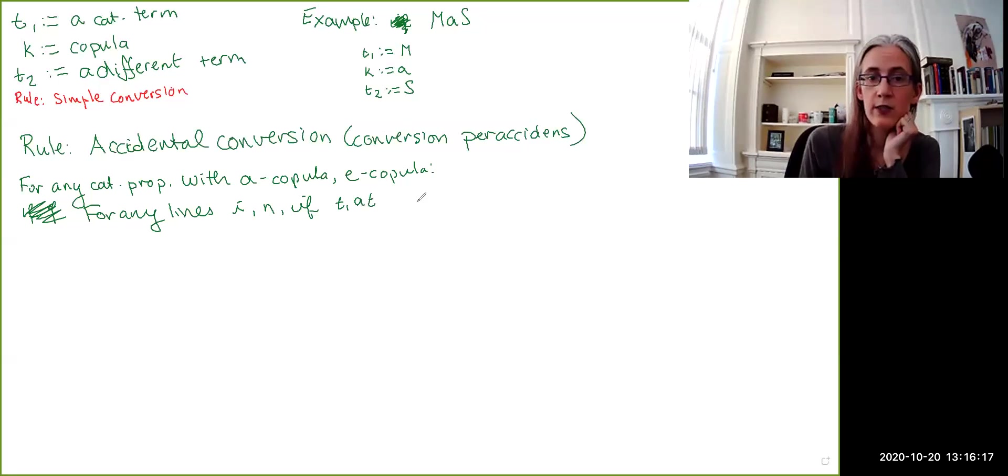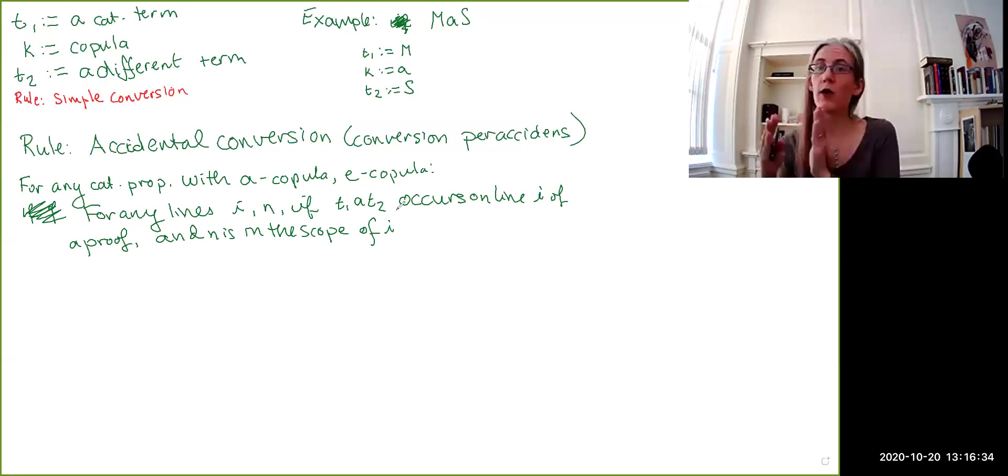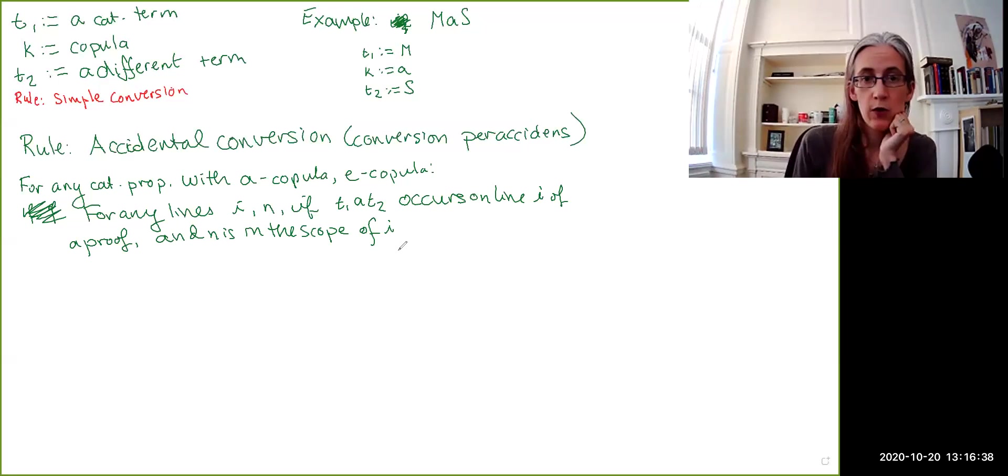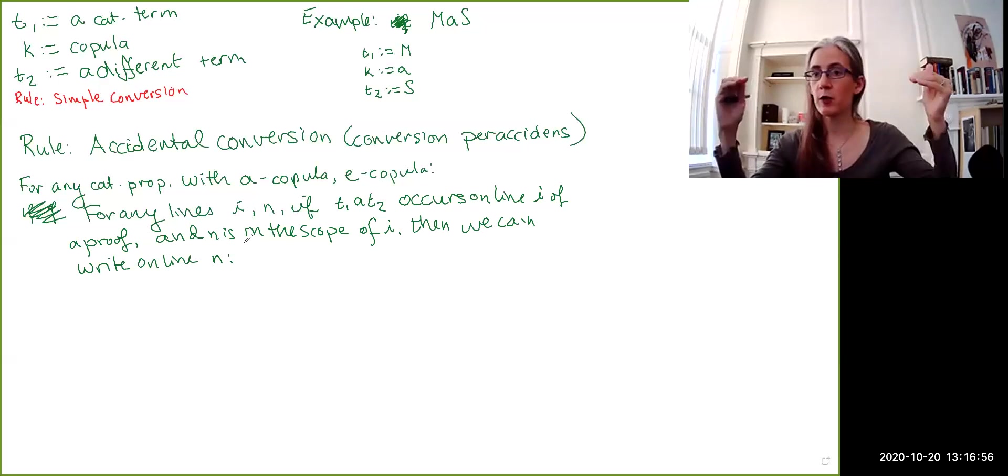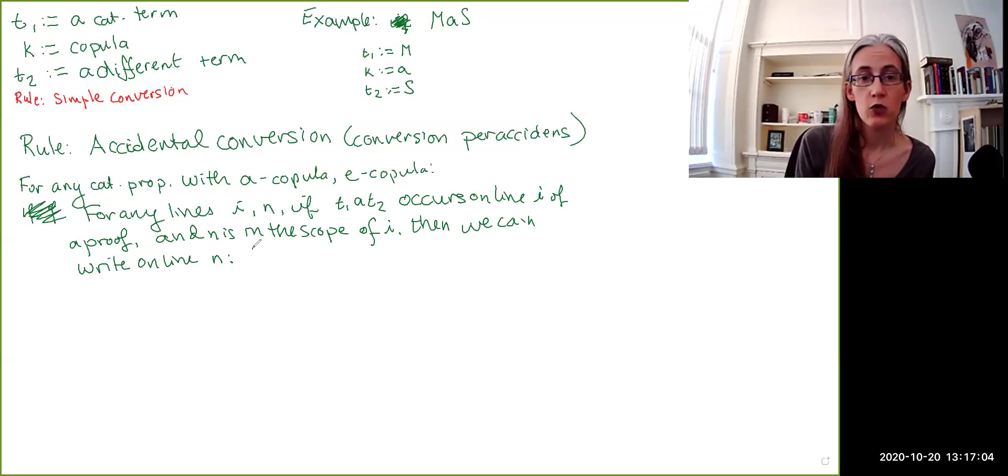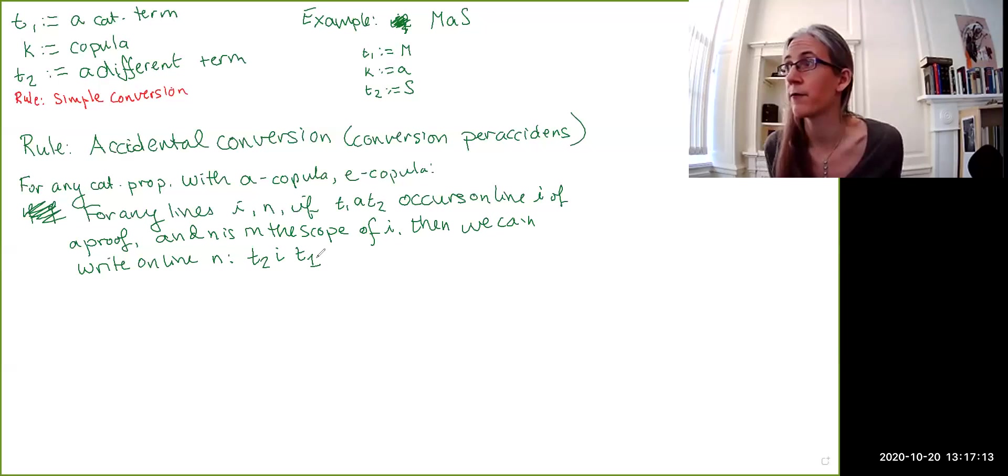For any lines I and N, if we have an A claim, so T1, A, T2 occurs on line I of a proof, and N is in the scope of I, so it has to be on the same scope line or more embedded than it. So, if these two things are true, then we can write on line N. This time, what we do, we swap the order of the terms, but we also change the copula. So, if we have a universal affirmative proposition, we will change it to the universal partial corresponding copula. So, we swap the order of the terms, so T2 comes first, we change the copula to I, and then we have our first term, T1.